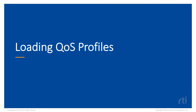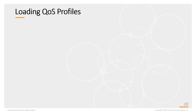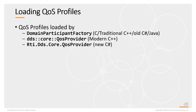How does DDS load QoS profiles? In the C and traditional C++, the older C-sharp API, as well as the Java API, it's actually loaded by the domain participant factory object. In the modern C++ API or the new C-sharp API, you access and control the loading of QoS profiles through the QoS provider object, which underneath uses a domain participant factory.